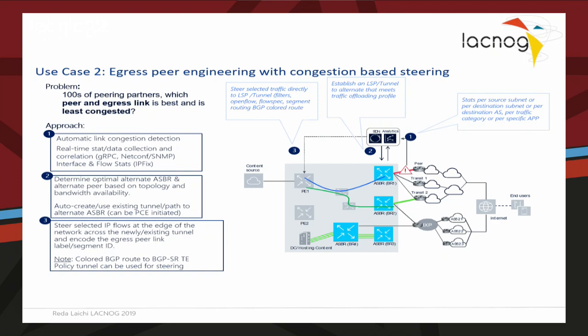Alternatively, if there's no existing path from my PE to the exit point, the SDN controller can create that path on the fly and steer traffic using LSP, segment routing, or any type of traffic engineering tunnel. As a closed-loop solution, we keep monitoring this, and there is a policy-driven mechanism that puts traffic back once the congestion condition goes away.